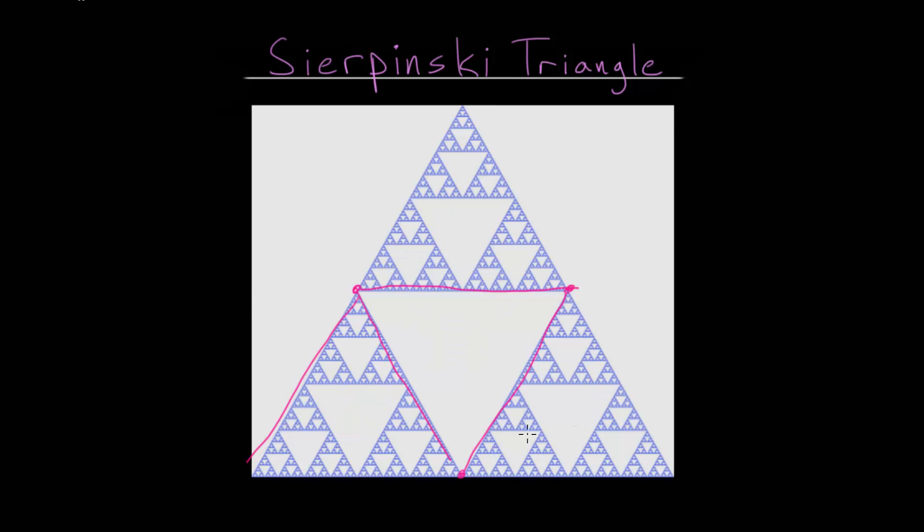And that process is then repeated. For each of the equilateral triangles that remain, you split them in half at their midpoints and create three new equilateral triangles. Actually, four. But the fourth one is then removed.